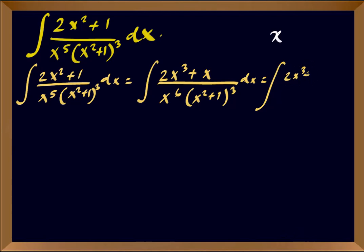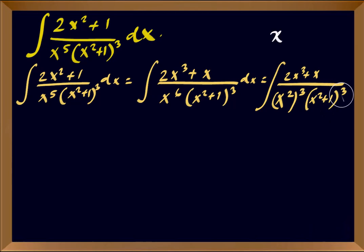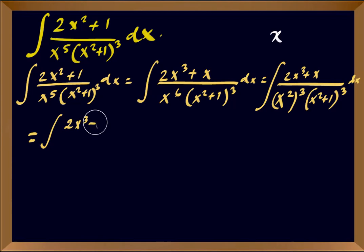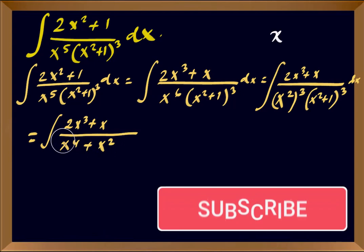We can write x⁶ as (x²)³. So the integral becomes (2x³ + x) over (x²)³ times (x² + 1)³ dx. Inserting x² inside the brackets, this equals (2x³ + x) over x² times the quantity (x⁴ + x²)³ dx.